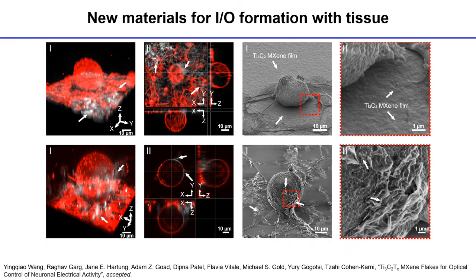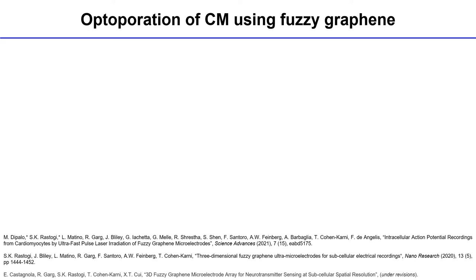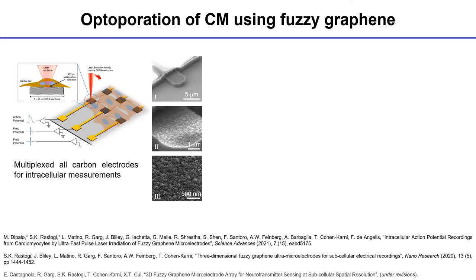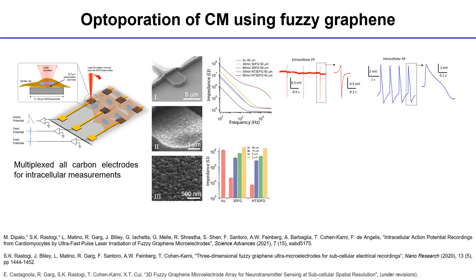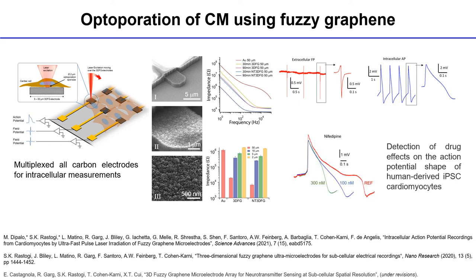As a teaser, MXene flakes perform even better than fuzzy graphene as a film — more details are coming in ACS Nano. Another unique aspect of the out-of-plane grown graphene is that we can generate microelectrodes and exploit the optical properties of this material to opto-porate cells using ultrafast laser pulses. We demonstrated a transition from extracellular to intracellular field potentials, multiple patches of up to nine cells simultaneously in seconds rather than hours, and the execution of drug assays.